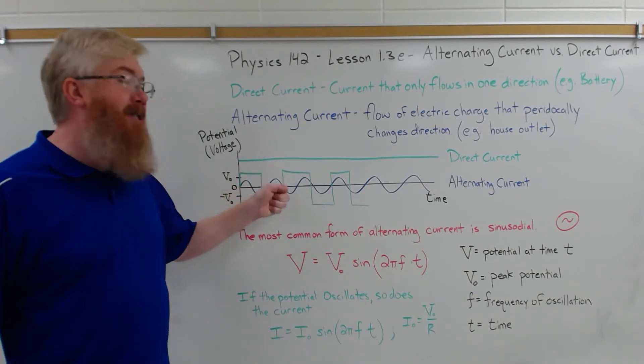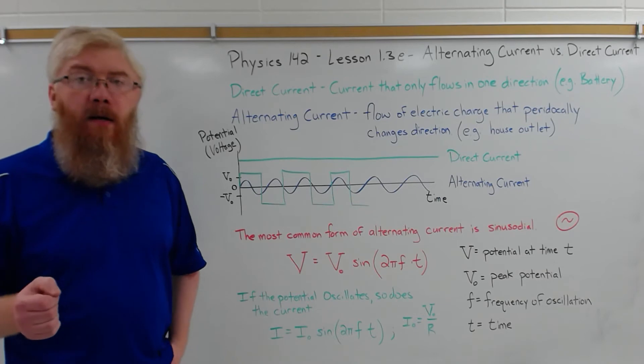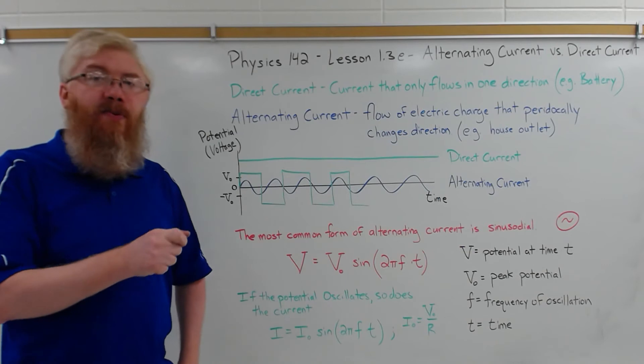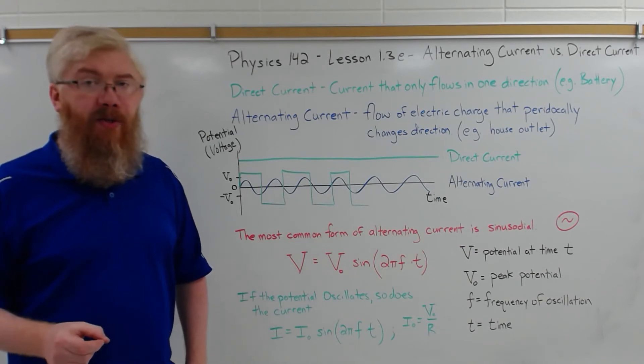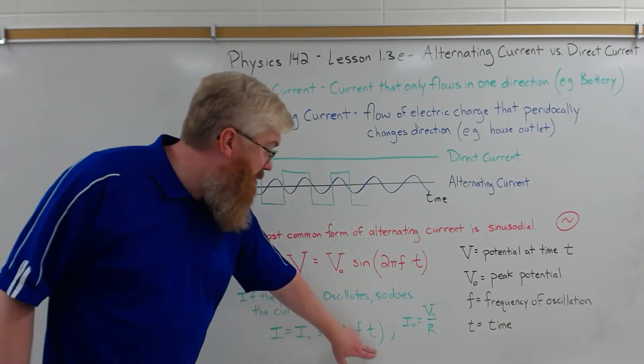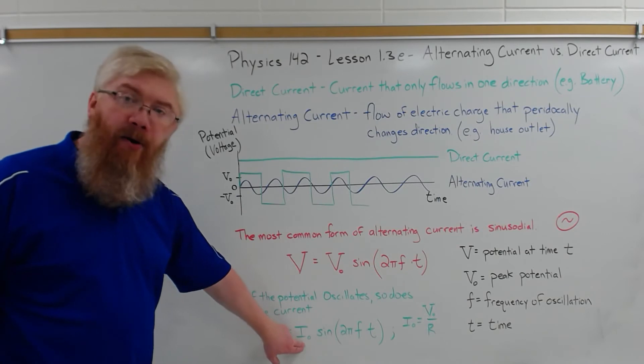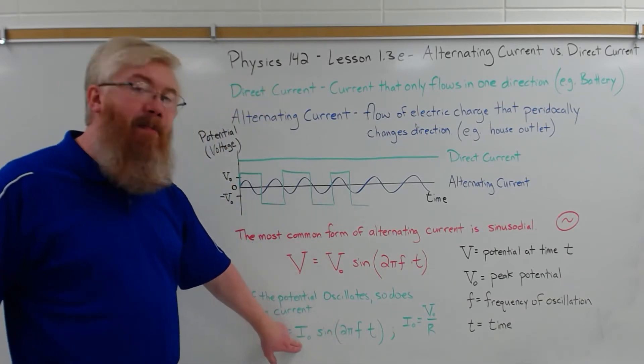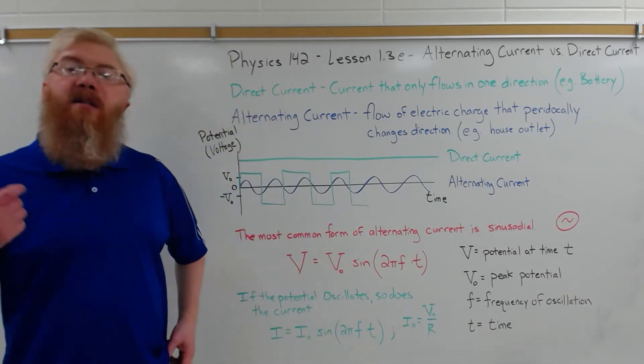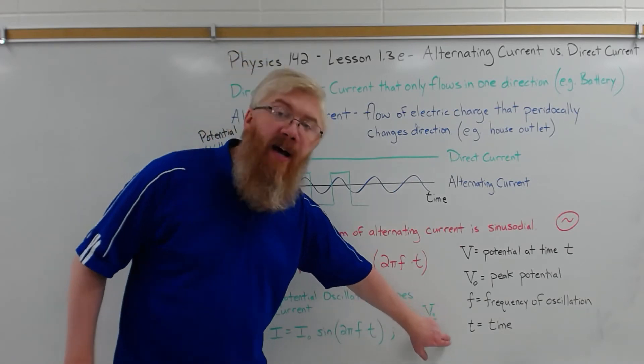Now, if the potential is changing with time, remember V equals IR, Ohm's law. For a resistance value, it doesn't change with time. So if voltage changes with time, the current must also change with time. So the current changing with time is, again, the same sinusoidal function. You just have a maximum current here. So the current at a time T depends on the maximum current of the circuit times this sinusoidal function. To figure out the maximum current in a circuit, take the maximum voltage divided by the resistance.